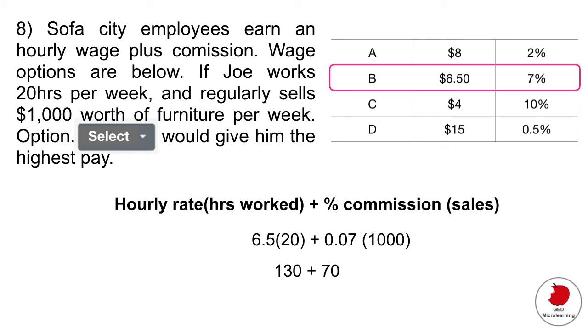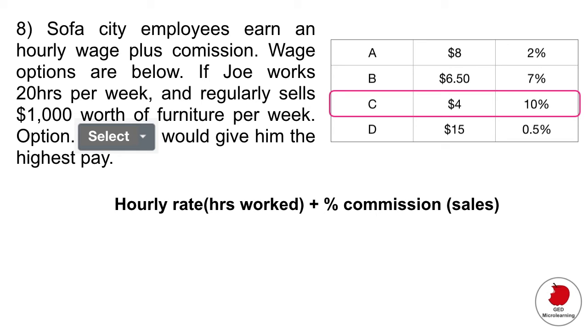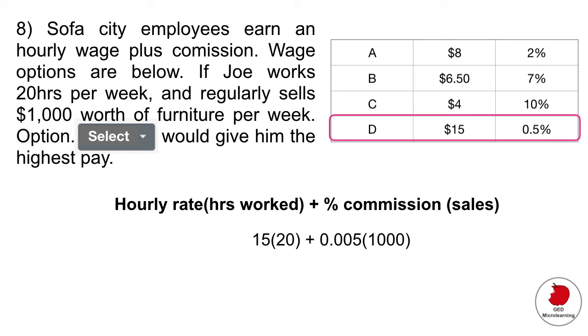If we look at option B, do the same sort of thing, plotting in the new values for hourly rate and commission, and he gets $200. So option C, he has a lower pay rate, but a higher commission. Plot the numbers in, he gets $180. And then the final one, he has a really low commission percentage, but he has a high hourly wage. So if you plot those numbers in, you can see that he ends up making much more money. It's $305.